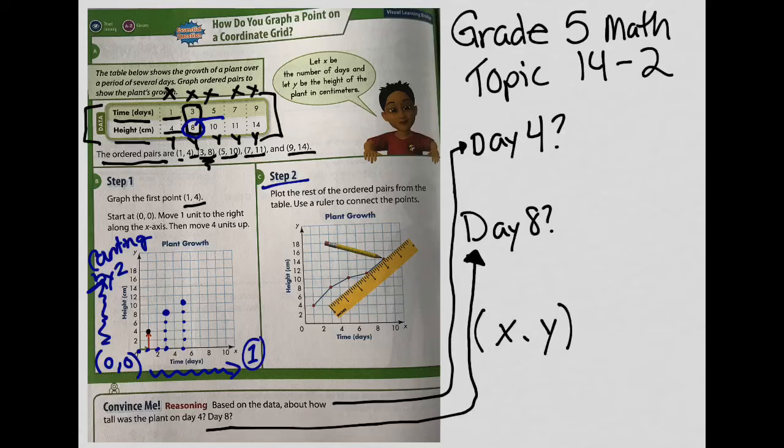Let's look at step 2. Plot the rest of the ordered pairs from the table. Use a ruler to connect the points. So let's see how many points they plotted. Well this point that the pencil is pointing to right now, let's see where that's at. So it's actually on 9 for the X. And then the Y is 2, 4, 6, 8, 10, 12, 14. Okay, so that's 9, 14.